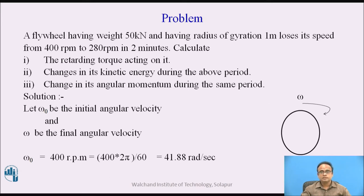Before solving this, we should first understand what RPM is. RPM is nothing but revolution per minute. The relation between omega and RPM: if n is RPM, then omega is equal to 2 pi n. So if we are writing the speed in RPM, the angular velocity can be written as omega equals 2 pi n, where n is speed in revolution per minute.